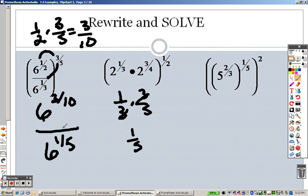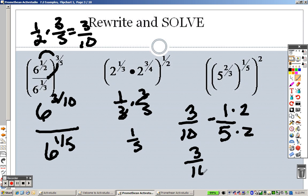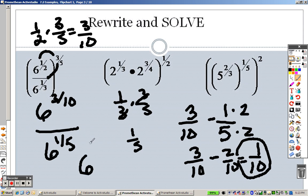Now, the problem is I have 3 tenths and 1 fifth, so because the bases are the same and it's division, all you do now is subtract the exponents. Well, the problem is they don't have the same base, so to make the same base, I multiply by 2, so I get 3 over 10 minus 2 over 10, which is actually 1 over 10. So that is my exponent, so when I subtract those, I actually get 6 to the 1 tenth as my answer.